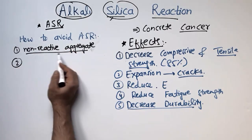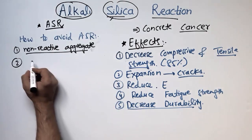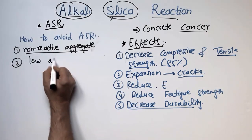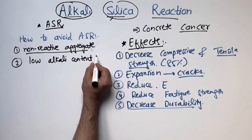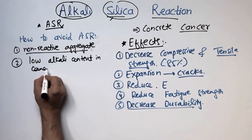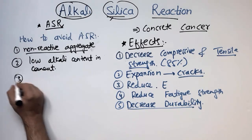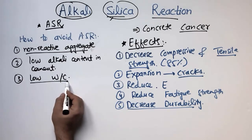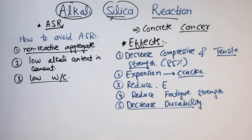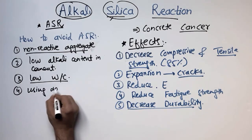Aggregates should be tested in the laboratory to confirm whether they are reactive or non-reactive. The second method is using low alkali content in the cement — this can reduce the ASR reaction in concrete structures. The third method is using a low water-to-cement ratio, which can also help avoid ASR.